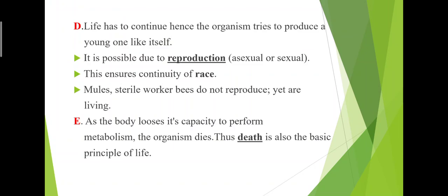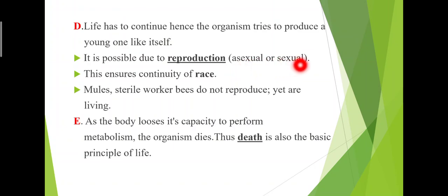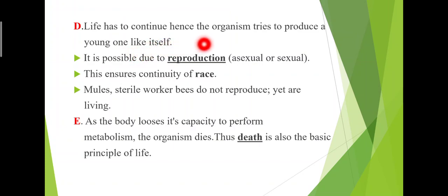The next one is reproduction. Reproduction takes place in both ways — asexual as well as sexual. Asexual means without mating of male and female, and sexual means with the help of sex organs. Life has to continue, hence the organism tries to produce a young one like itself. Production of young ones of their own kind is reproduction, and that basic principle is found only in living organisms. It is of two types: asexual and sexual.